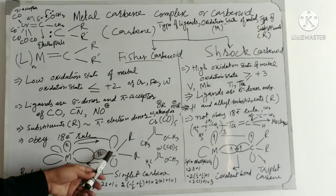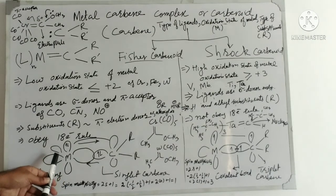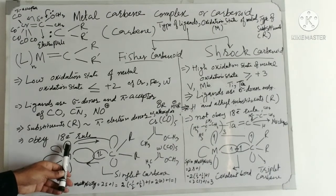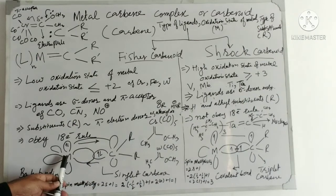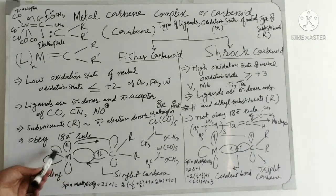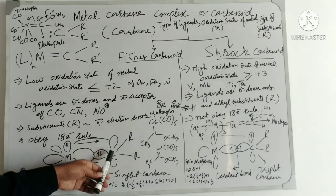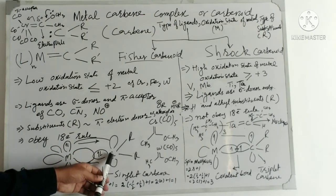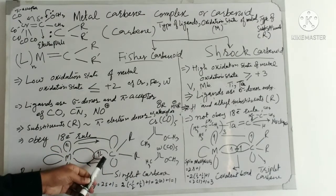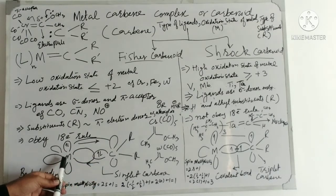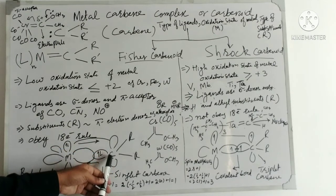In Fischer Carbenoid, the carbene donates these two electrons to the metal's empty d orbitals, and the ligands are pi acceptors. The metal has empty d orbitals, and these electrons are donated into those empty d orbitals. Then, the electrons in the metal d orbitals are back-donated to the carbene's empty p orbitals. So, carbene donates electrons to the metal's vacant d orbitals, and from the d orbitals, electrons are back-donated to the empty p orbitals of the carbene.